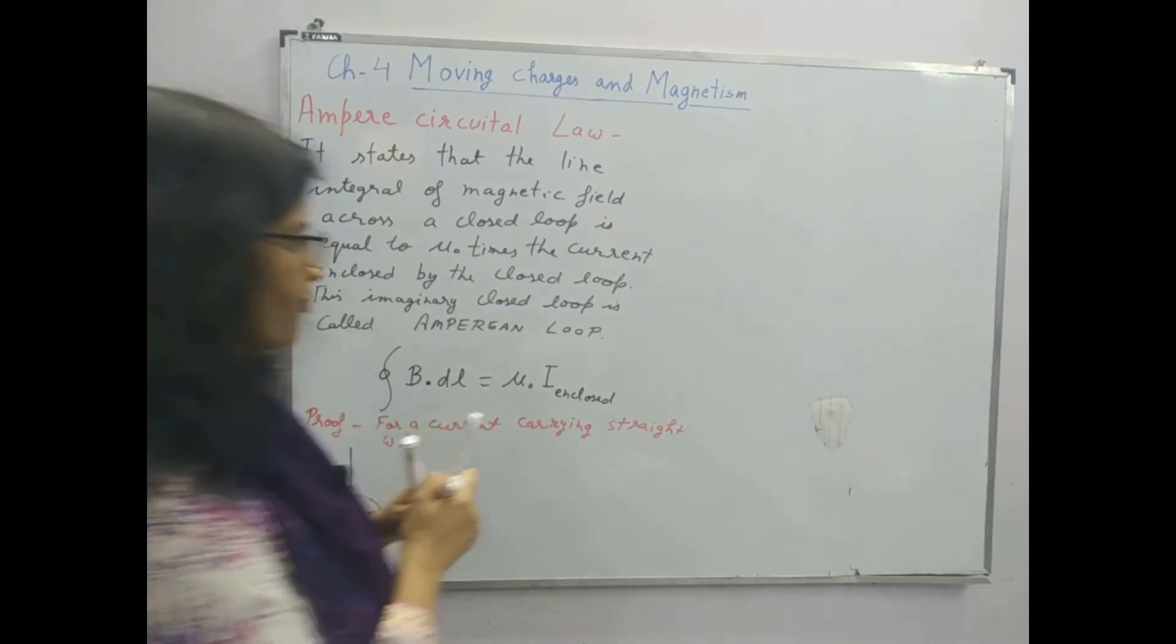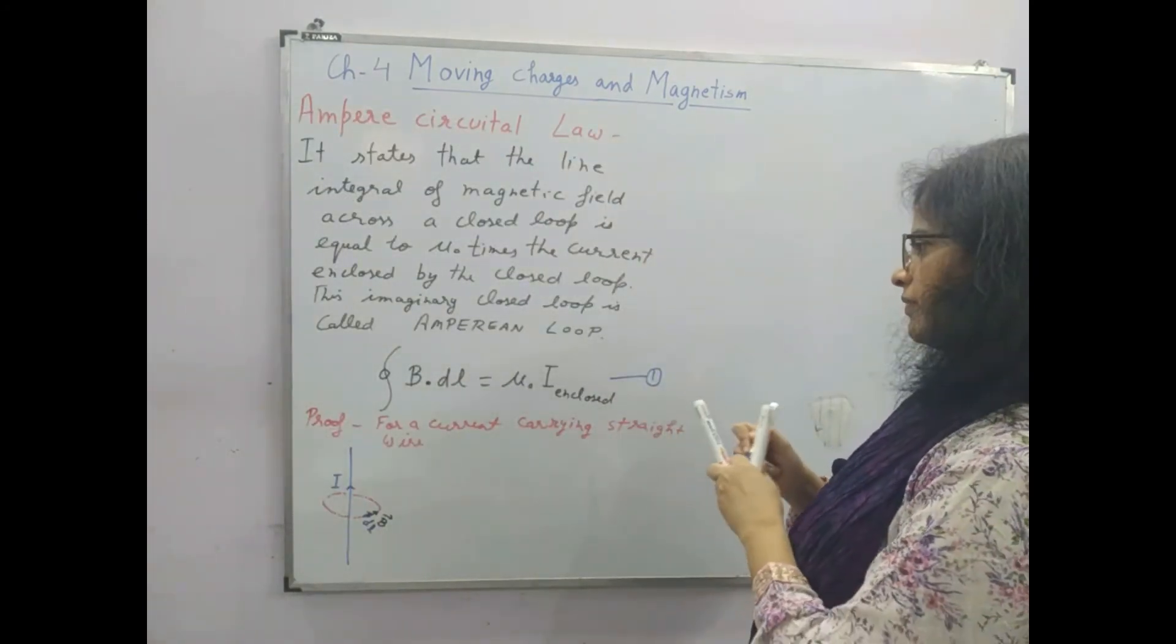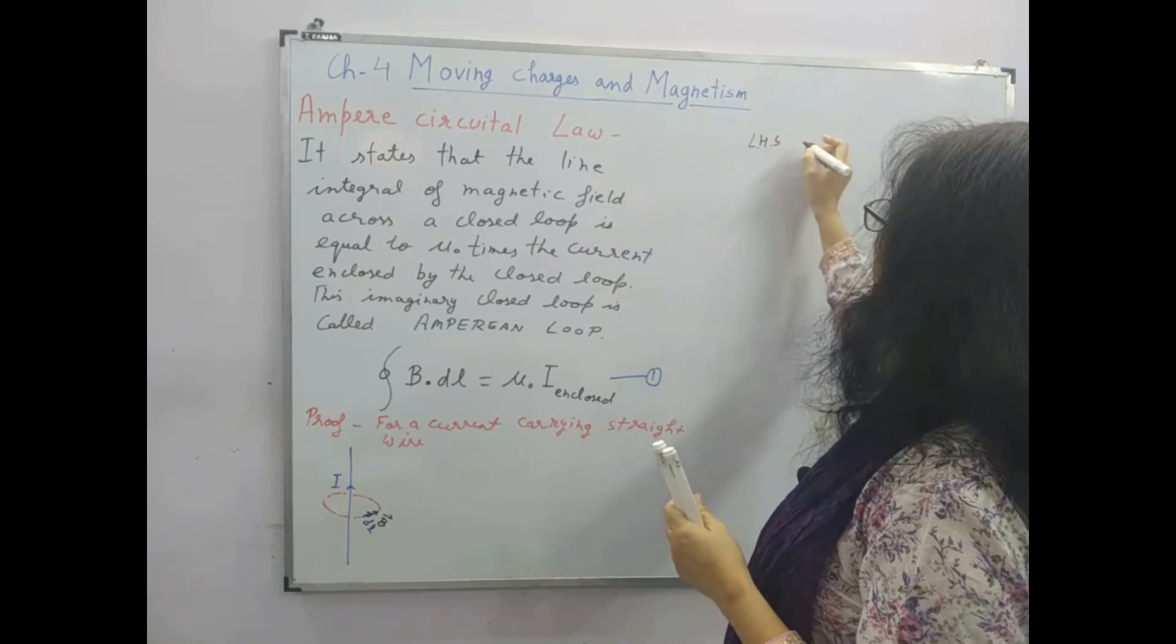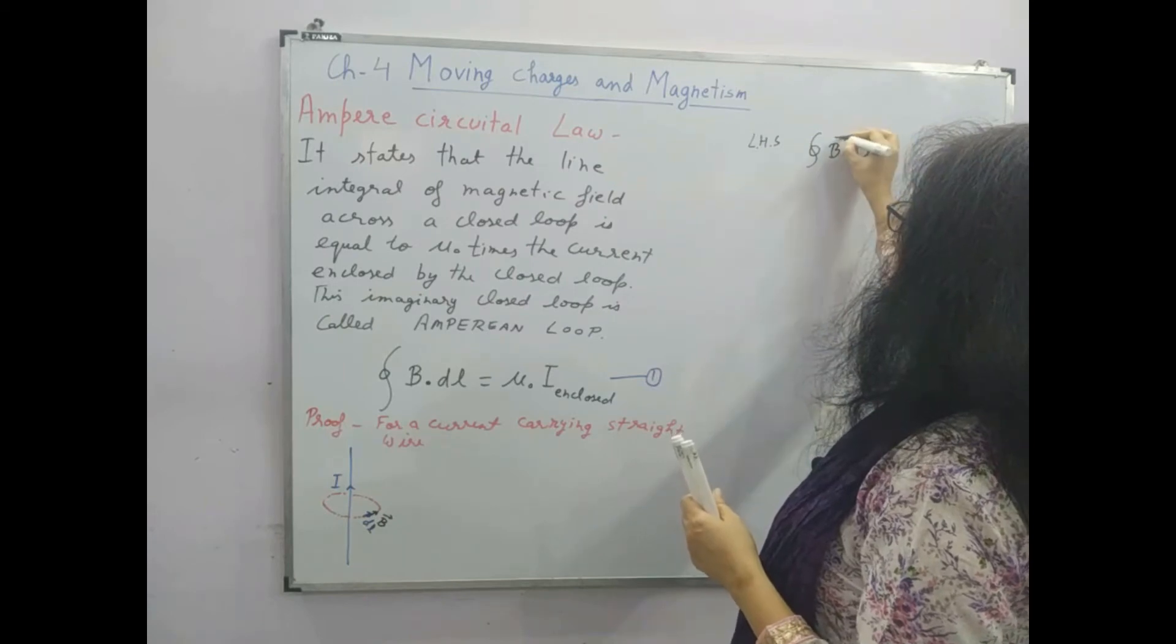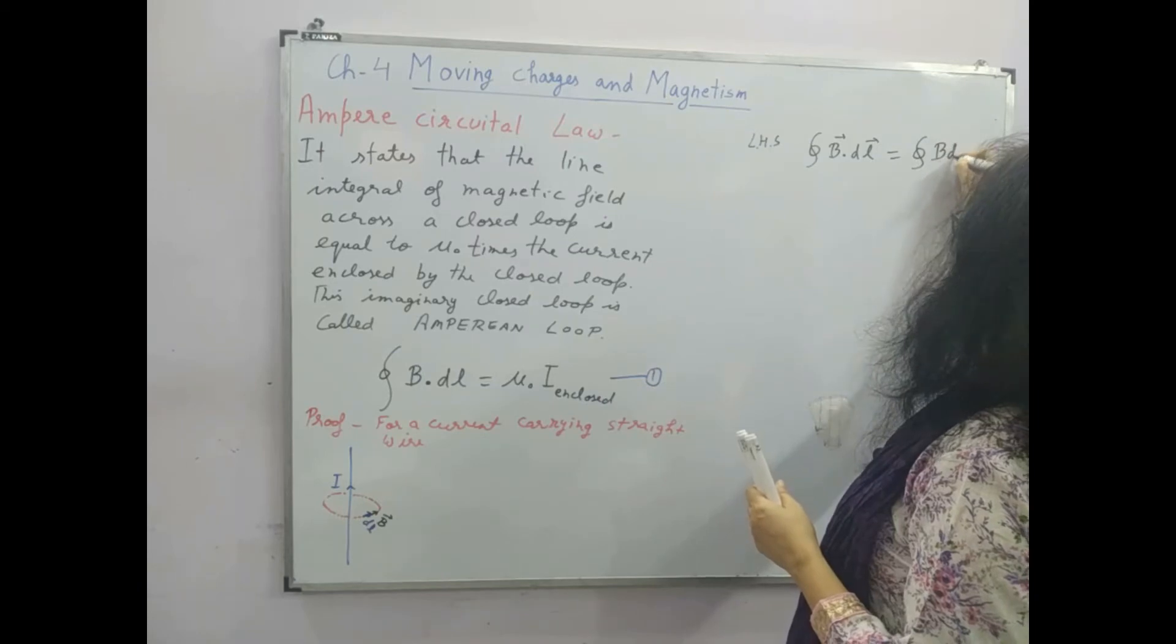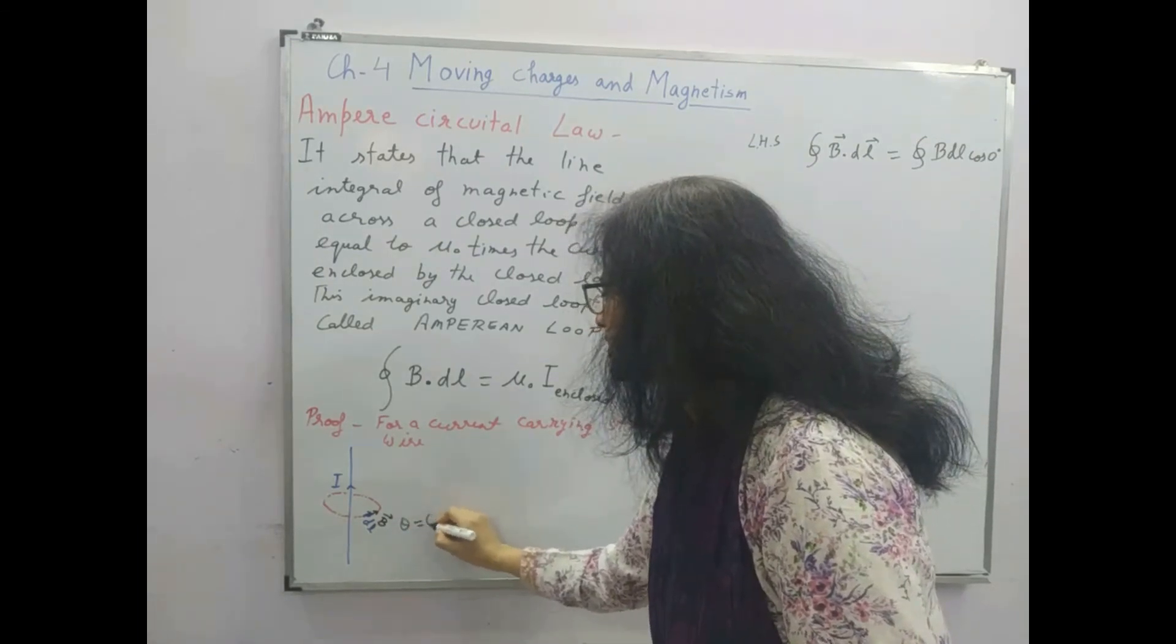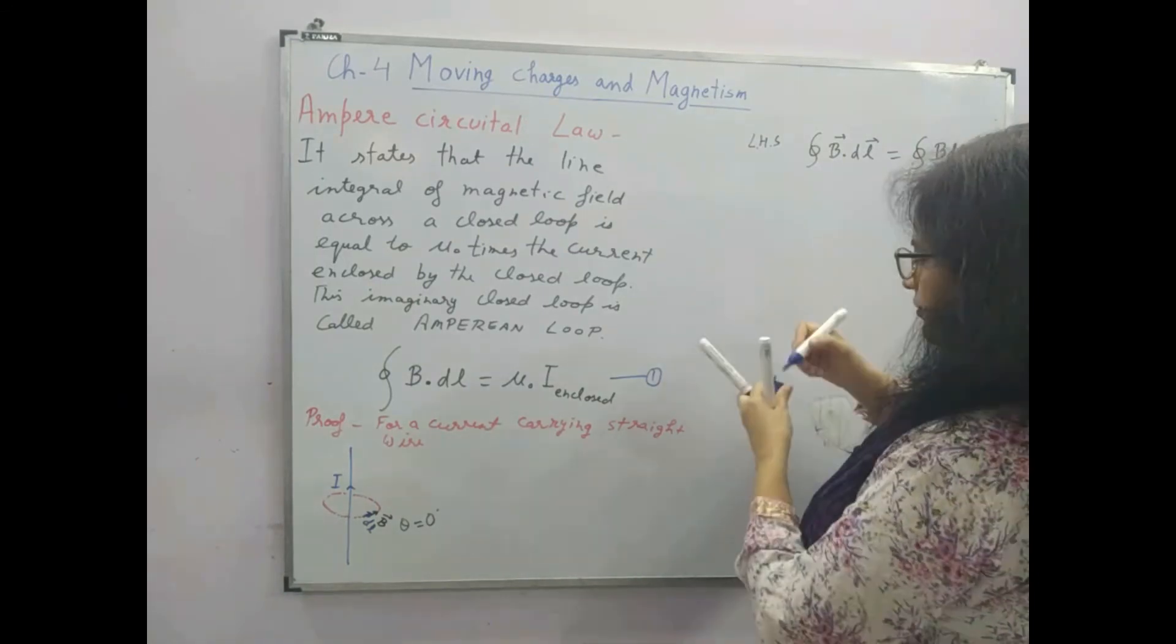Right? So from here if I use the expression, I can write, take the left side. This is B dot dl is equal to B dl cos of 0 degree, because here the angle between B and DL is 0 degree. So from here you can write B dl.